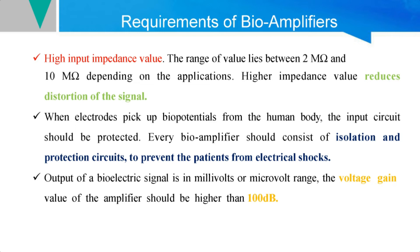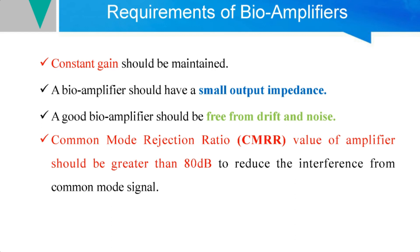A constant gain must be maintained throughout the amplifier. It should have a small output impedance while maintaining a high input impedance. A good biological amplifier should always be free from drift and noise. Drift refers to thermal changes — the amplifier should withstand all thermal effects within the measurement setup as well as natural disturbances outside the room, such as thunderstorms or lightning. The amplifier must be designed to be free from drift and noise.